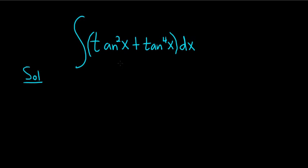So one idea might be to break it up into two integrals. So the integral of tangent squared plus the integral of tangent to the fourth. However, I think it might be easier if we factor out a tangent squared. Let's try that.